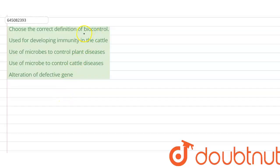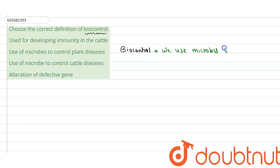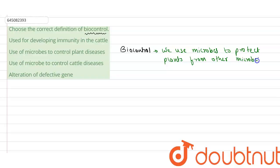Hello everyone, we have a question here: choose the correct definition of biocontrol. Now, biocontrol is a method in which we use microbes to protect plants from other diseases, from other microbes, insects, or pests.